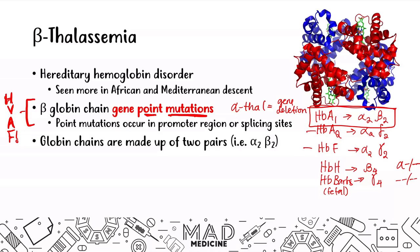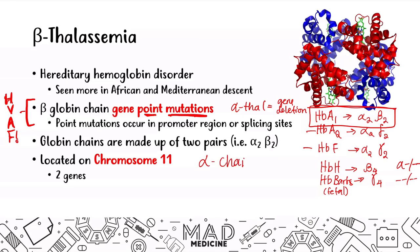Hemoglobin A2 and F are also going to be normal or high depending on the situation. As far as the beta chain is concerned, it is located on chromosome 11 and has two genes. The alpha chain was located on chromosome 16 and had four genes associated with it. These are things you definitely need to know as an overview of beta thalassemia.